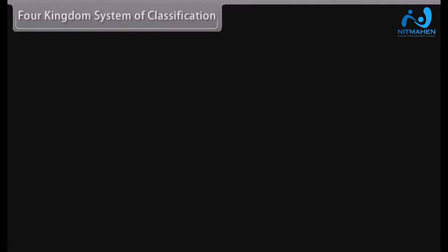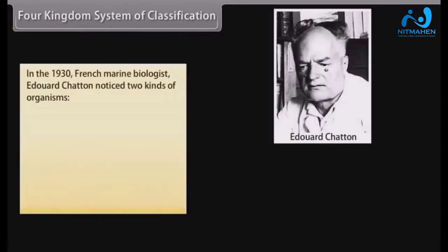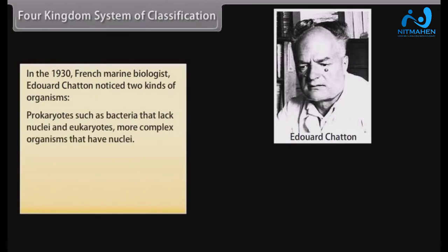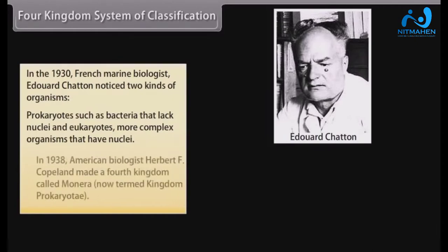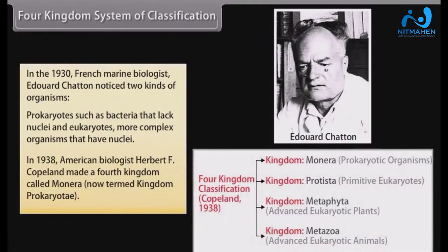The Four Kingdom System of Classification: In the 1930s, French marine biologist Edward Chatton noticed two kinds of organisms — prokaryotes, such as bacteria that lack nuclei, and eukaryotes, more complex organisms that have nuclei. In 1938, American biologist Herbert F. Copeland made a fourth kingdom called Monera, now termed kingdom Prokaryote.